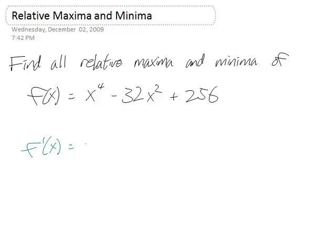f prime using the power rule is 4x cubed minus 64x. The 256 drops away, so we don't have that anymore.